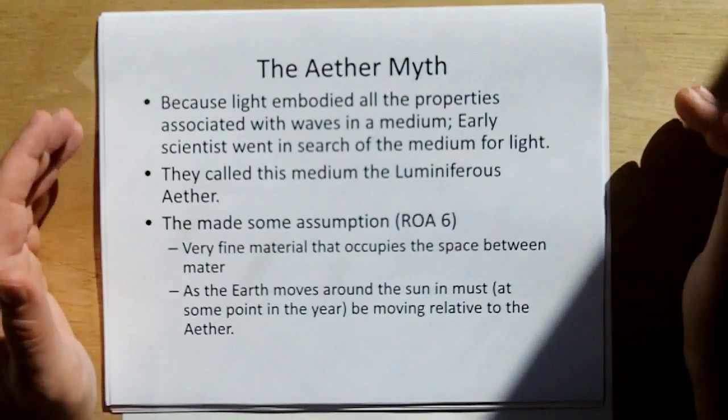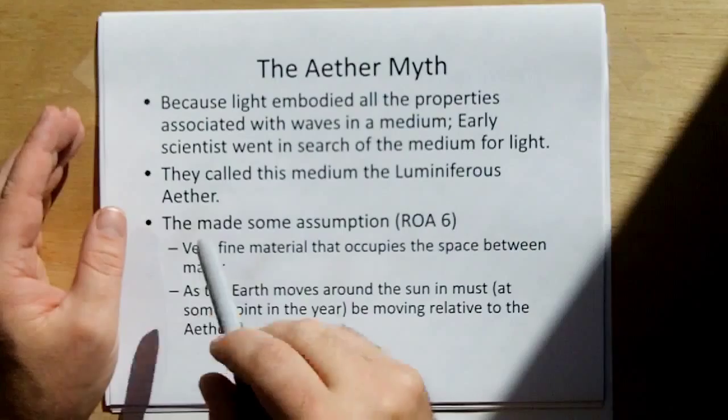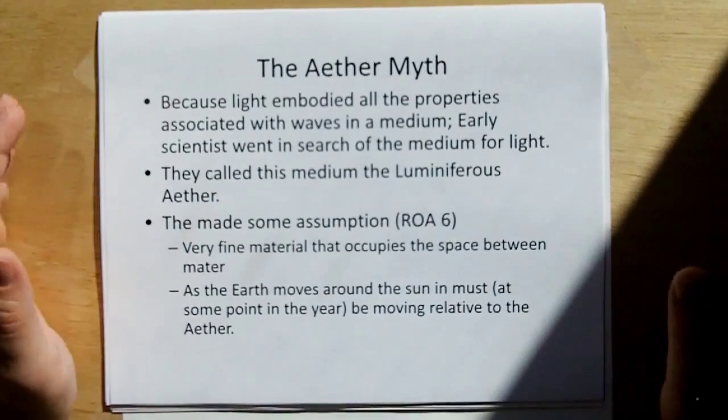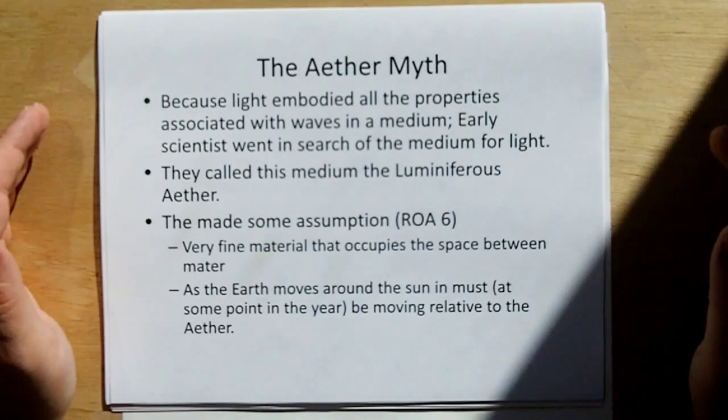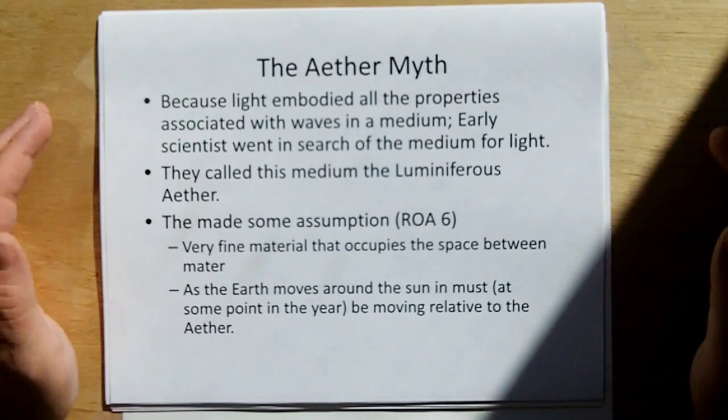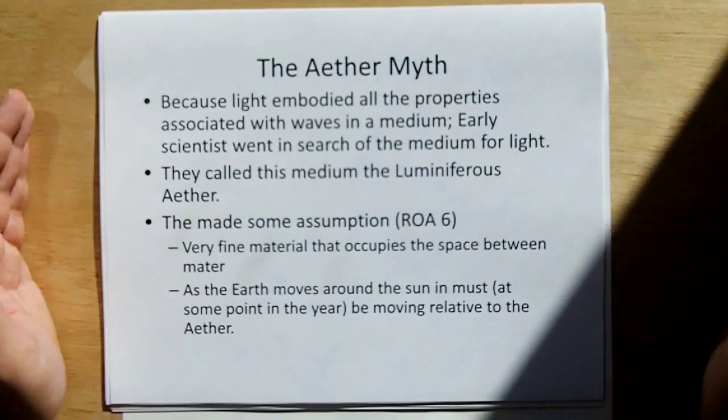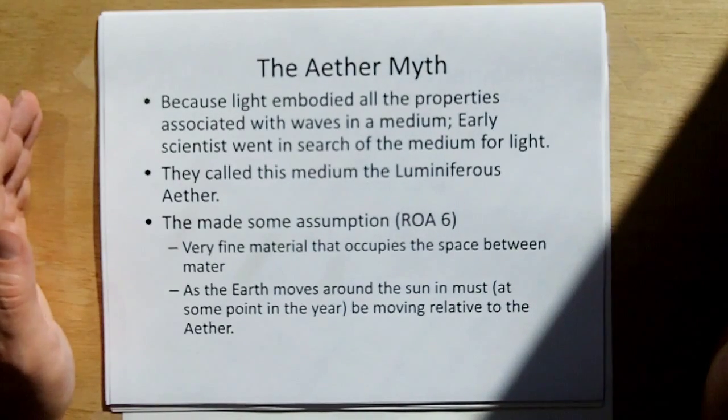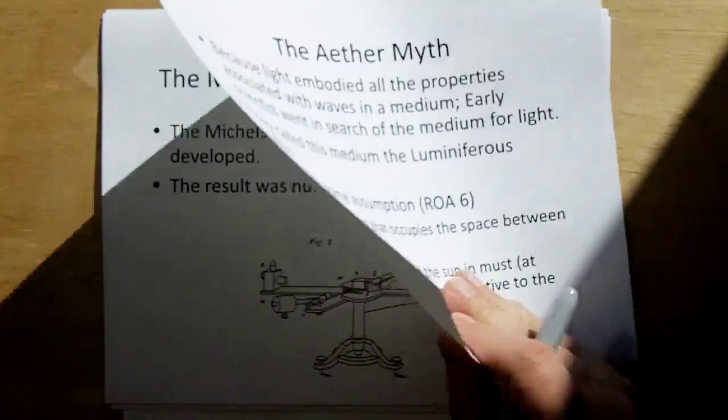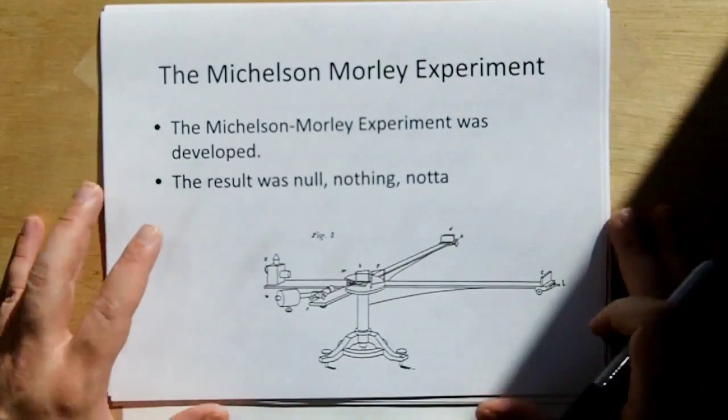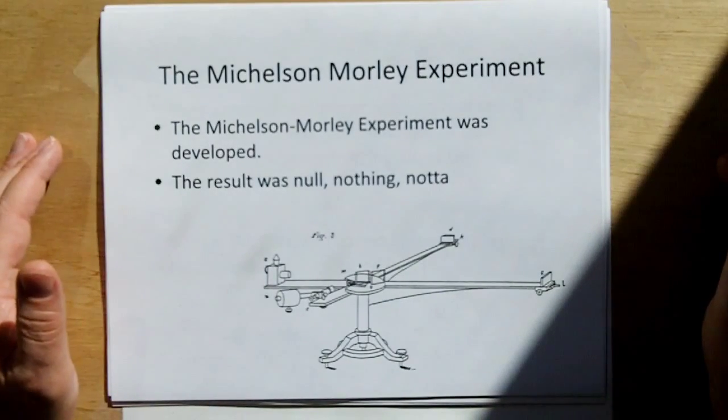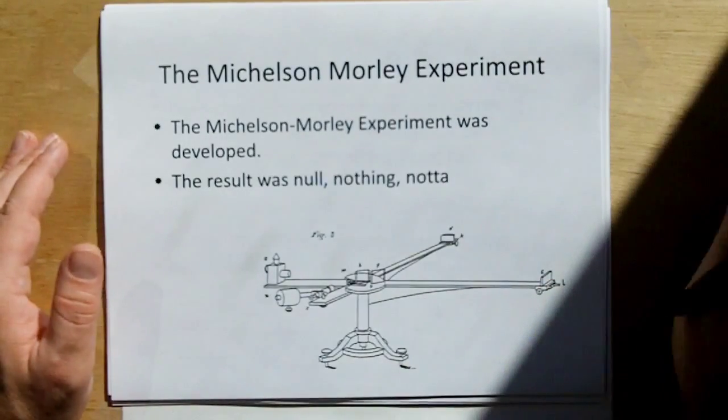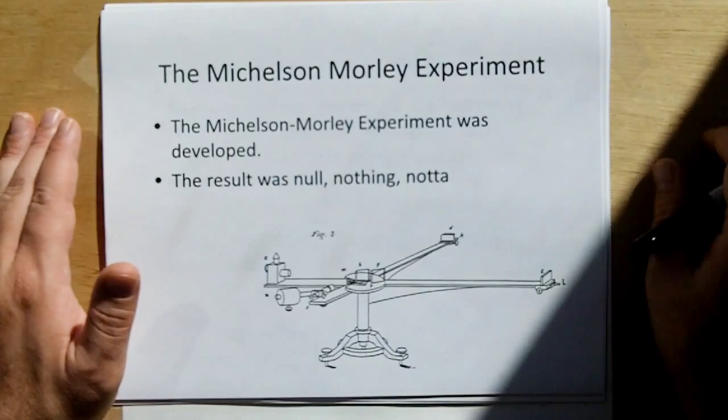Let's take a sidetrack here. Go back to the 1800s, and because light embodied all the properties associated with regular waves that exist in a medium, early scientists went in search of the medium for light. They called this medium the luminiferous aether. And they made a lot of assumptions. They thought it was a very fine material that occupies the space between the matter. And as the earth moves around the sun, it must at some point in the year be moving relative to the aether. So they developed what's called the Michelson-Morley experiment, which is a two-arm interferometer.